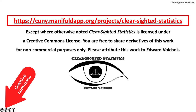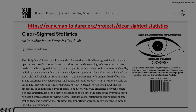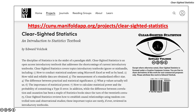Except where otherwise noted, Clear-Sighted Statistics is licensed under a Creative Commons license. You are free to share derivatives of this work for non-commercial purposes only. Please attribute this work to Edward Volchak. You can access Clear-Sighted Statistics for free, along with its Excel and PowerPoint files, on the CUNY Commons.